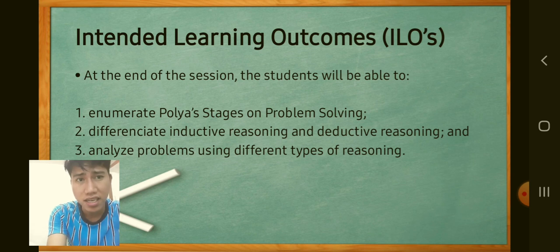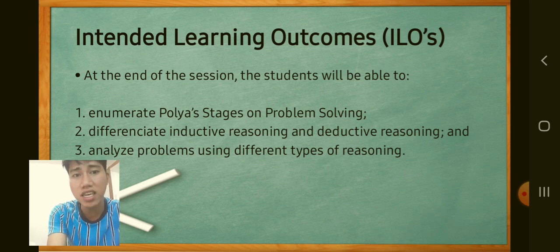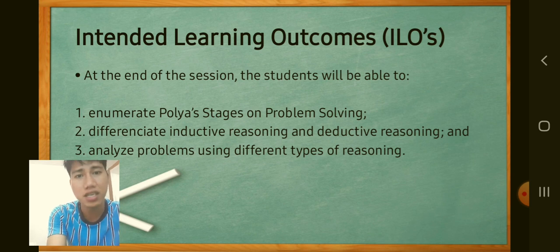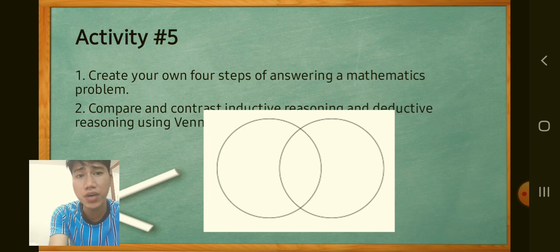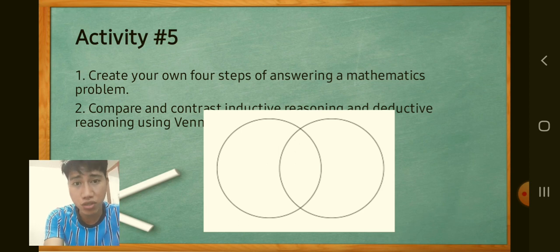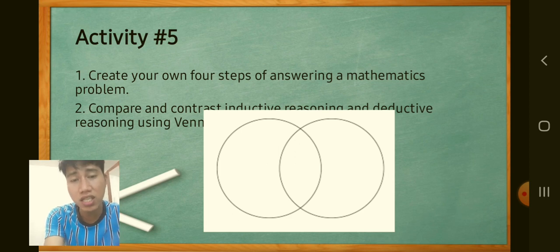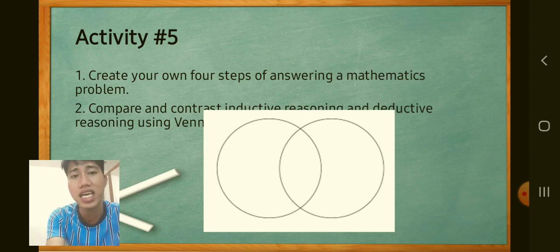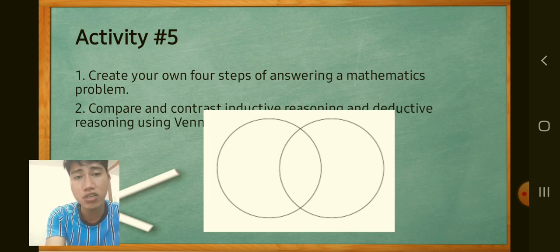Here is Activity Number 4. First, create your own four steps for answering a mathematical problem — it depends on you what four steps you want to use in solving word problems. Second, compare and contrast inductive reasoning and deductive reasoning using a Venn diagram.